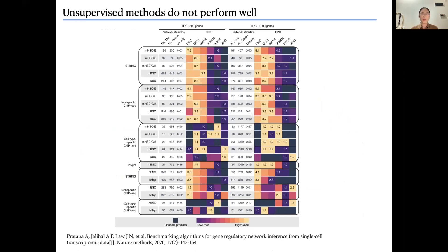That makes it possible to predict GRNs from single-cell RNA sequencing data. However, single-cell RNA sequencing data has a dropout problem, so it is not applicable to apply algorithms developed for bulk data to single-cell data. Based on a review paper, the performance of most algorithms does not perform very well, especially when using cell-type specific ChIP-seq data as the gold standard, and some are even close to a random predictor.